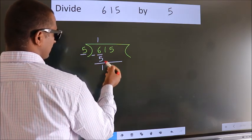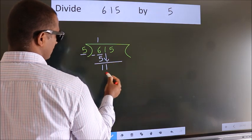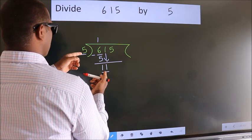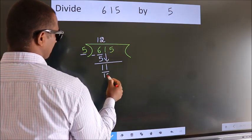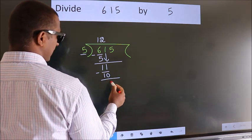After this, bring down the beside number. So, 1 down, making 11. A number close to 11 in the 5 table is 5 times 2, which is 10. Now, we subtract. We get 1.